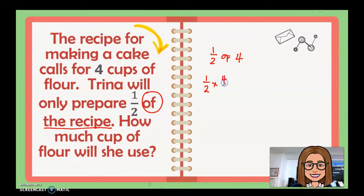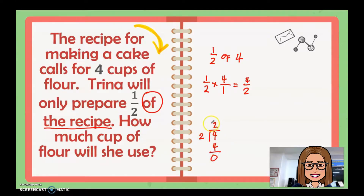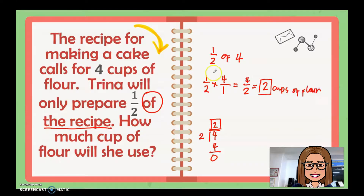If you write the equation, it is one half times four. Since four is a whole number, the rule is you put one as the denominator, then multiply the numerators and the denominators. That gives you four over two. Divide: four divided by two is two, with no remainder, so the answer is the whole number two. Therefore, she will use two cups of flour.